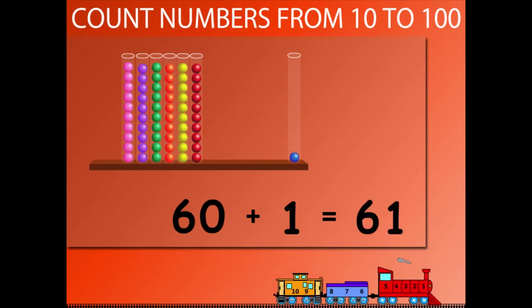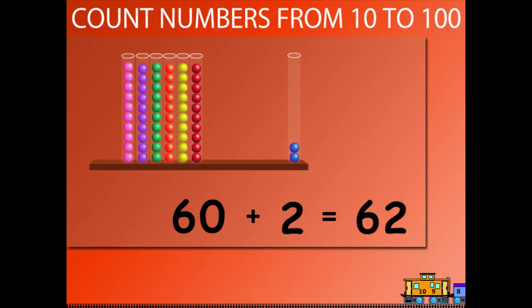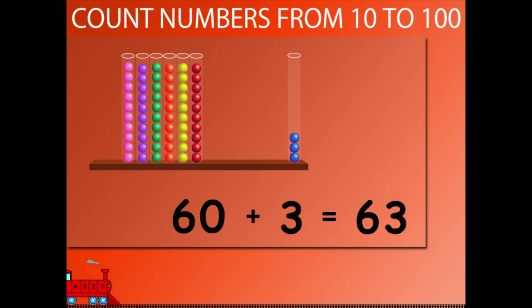50 plus 8 is equal to 58. 50 plus 9 is equal to 59. 50 plus 10 is equal to 60. 60 plus 1 is equal to 61. 60 plus 2 is equal to 62. 60 plus 3 is equal to 63.